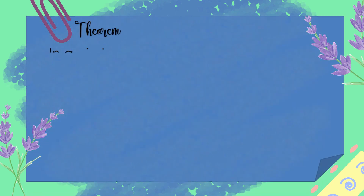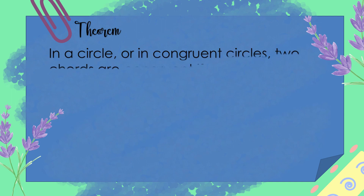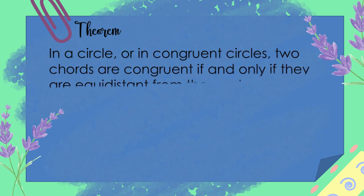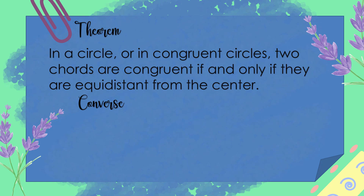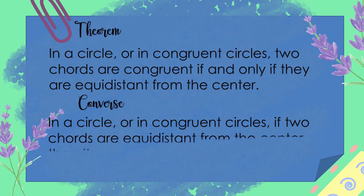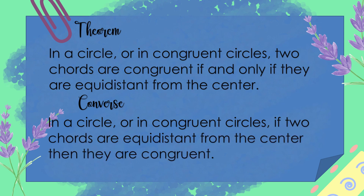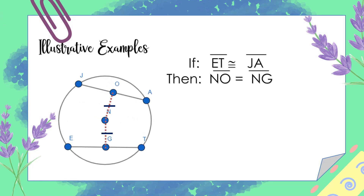Now let's have the third theorem. In a circle or in congruent circles, two chords are congruent if and only if they are equidistant from the center. The converse: in a circle or in congruent circles, if two chords are equidistant from the center, then they are congruent. For the illustrative example: if segment ET is congruent to segment JA, then segment NO is equal to segment NG.